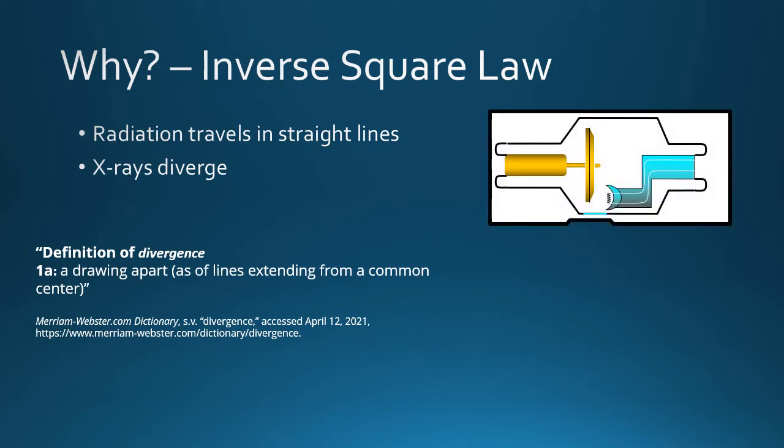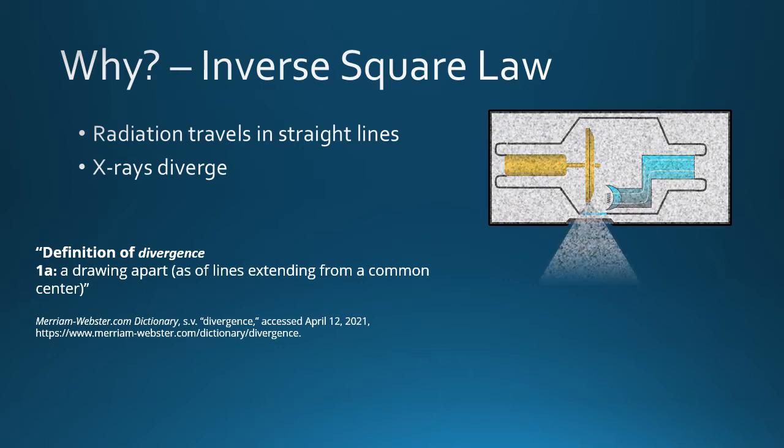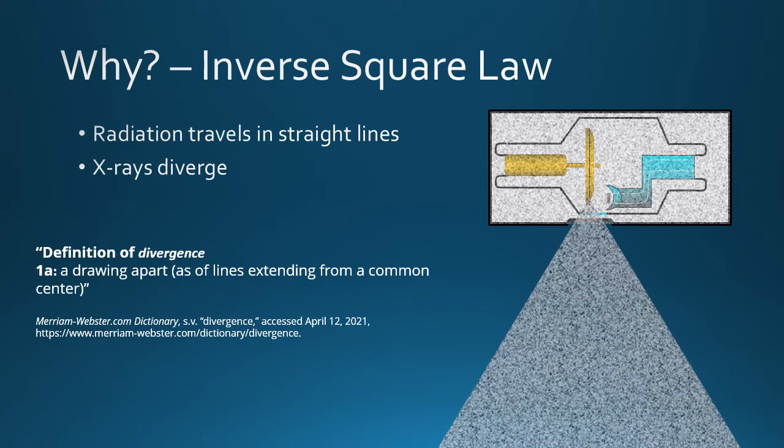Here is an x-ray tube surrounded by a lead-lined housing with a hole — the tube port — where the x-rays can escape the housing. First, radiation fills the housing, then escapes the tube port. The radiation is then shaped by the collimator into a rectangular or square field of radiation. Note that the field of radiation widens, or diverges, as it travels along its path.